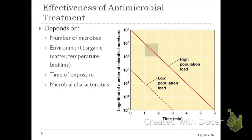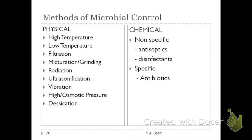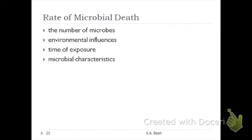There are two main methods of microbial control: the physical method and the chemical method. For tonight, we will concentrate first on the physical methods. Physical methods include using high or low temperature, filtration, maceration or grinding, radiation, ultrasonication using high-frequency waves, high osmotic pressure, and desiccation — removal of water. All of these are considered physical methods of microbial control.